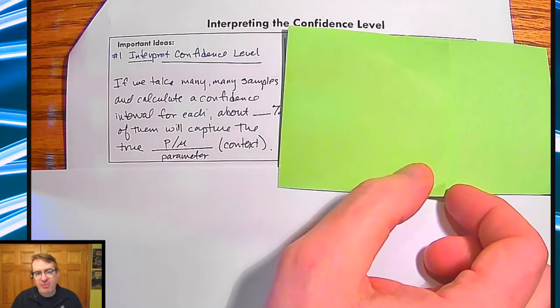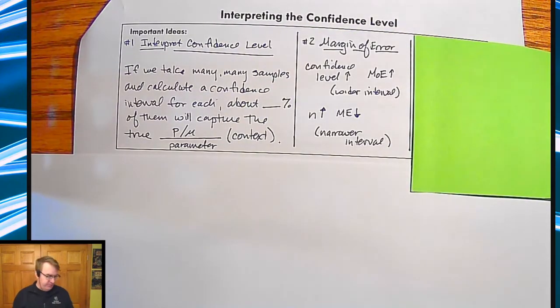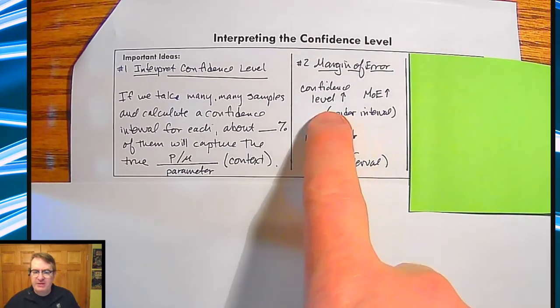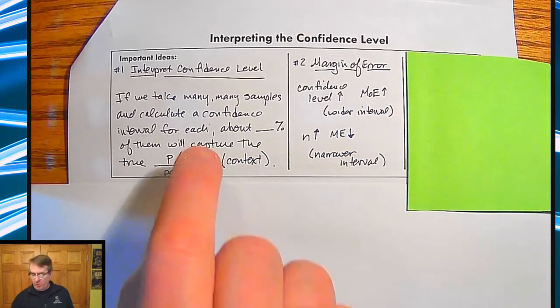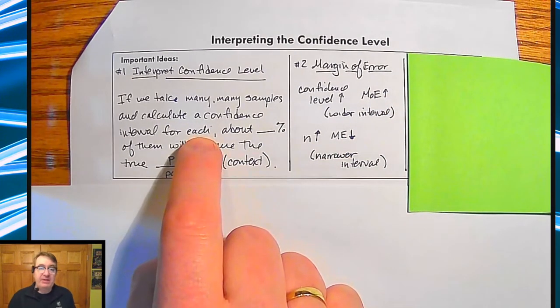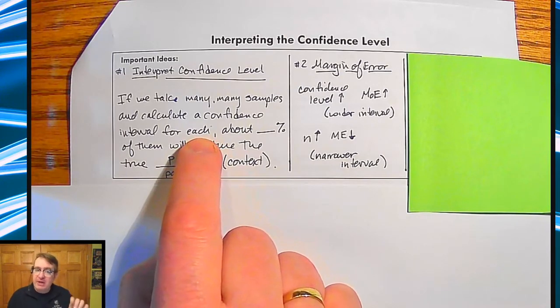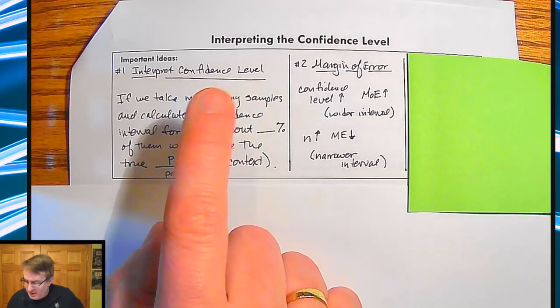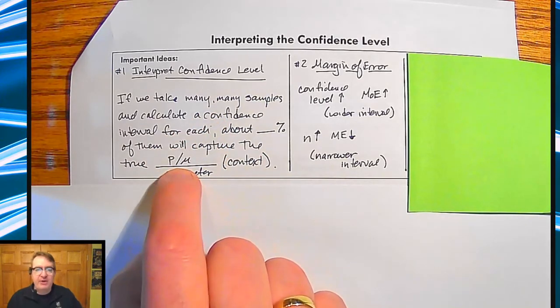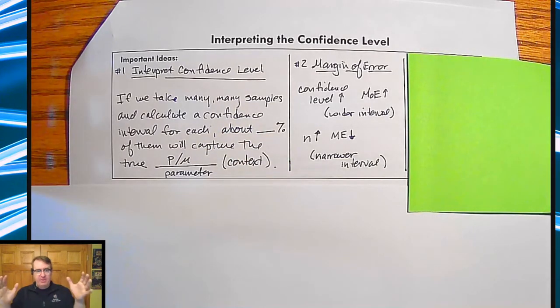So just kind of describing the process. For step two, margin of error. And again, this is just interpretation. We're going to talk about calculating margin of error later. As a confidence level goes up, the margin of error goes up. And the reason for that is to catch more, to have our samples, many, many samples. Remember, we're going to take many, many samples. To be able to catch that proportion or mean in our net, in that interval, if I want that number to go up, we have to start casting a bigger and wider net.